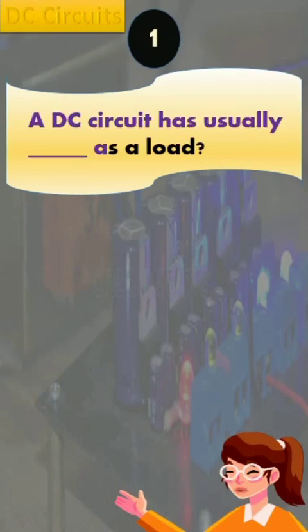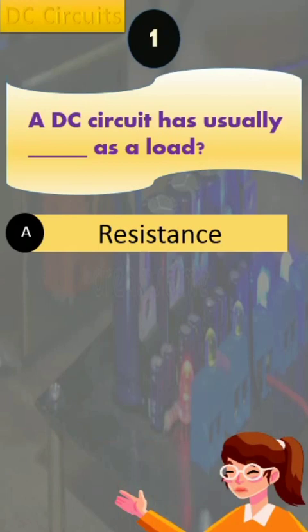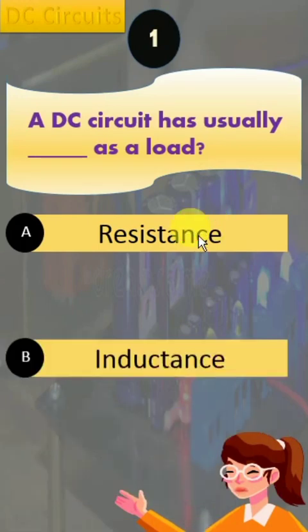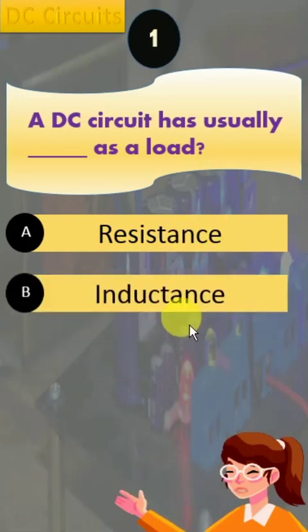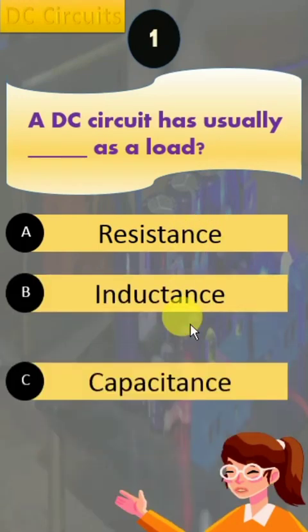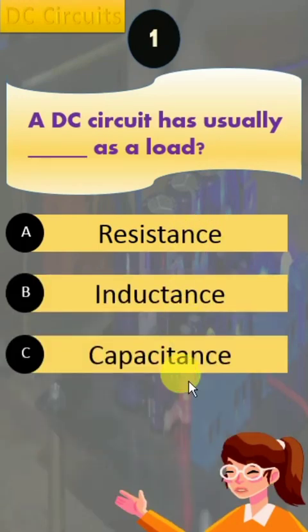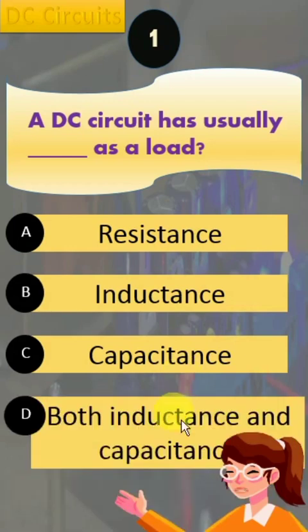Question number one says: a DC circuit has usually dash as a load. Option A: resistance, Option B: inductance, Option C: capacitance, and Option D: inductance and capacitance.